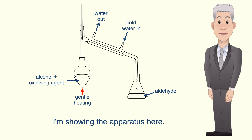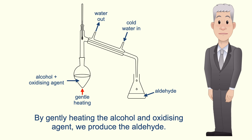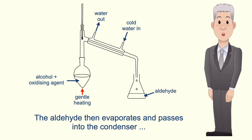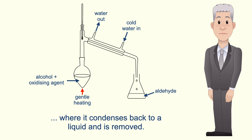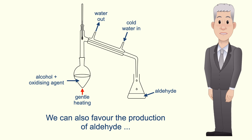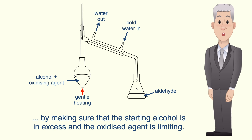I'm showing the apparatus here. By gently heating the alcohol and oxidizing agent we produce the aldehyde. The aldehyde then evaporates and passes into the condenser, where it condenses back to a liquid and is removed. We can also favor the production of aldehyde by making sure that the starting alcohol is in excess and the oxidizing agent is limiting.